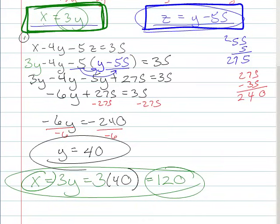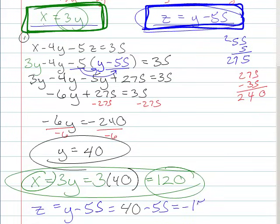And finally, I can use this to say, okay. So I've got z is equal to y minus 55. And I know that y is 40. So I do minus 55. So 40 minus 55 gives me negative 15.